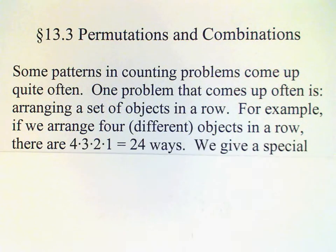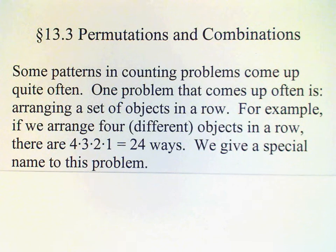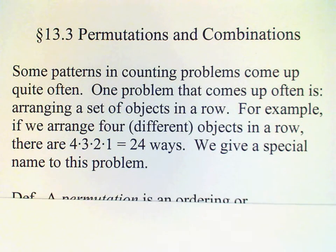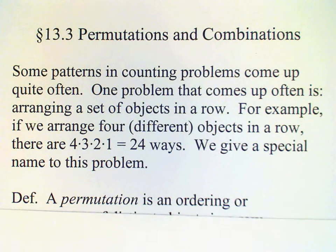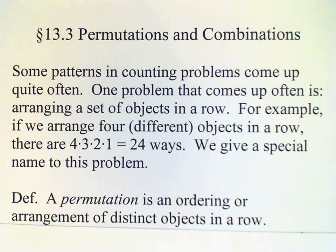So for example if we have four different objects that we want to arrange then there are four times three times two times one or 24 ways to arrange these objects. Again think about filling these slots and because this comes up fairly often we have a special name for this type of problem and that special name is called permutation.